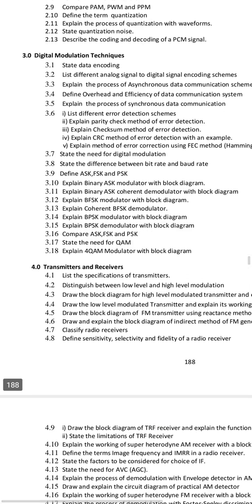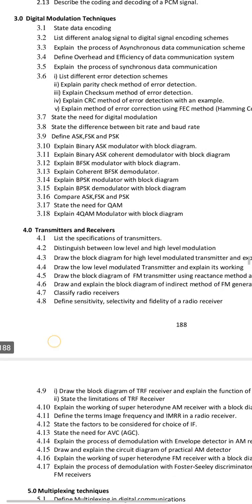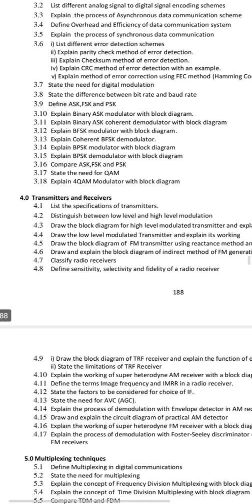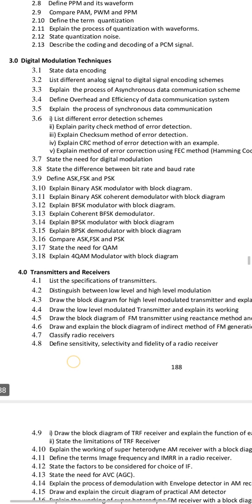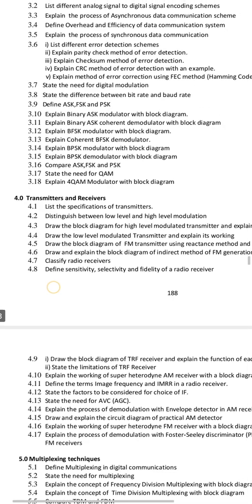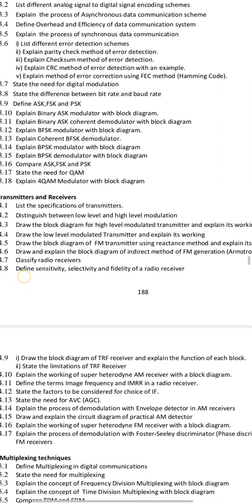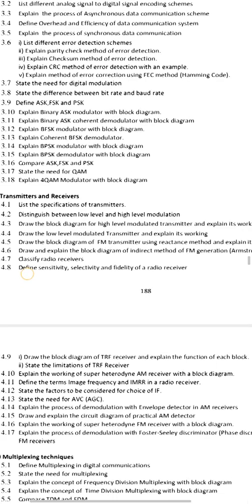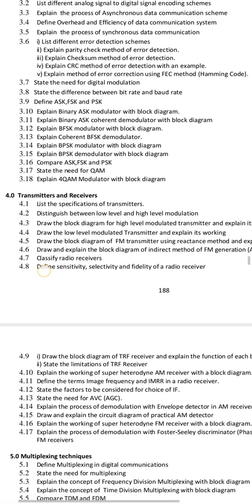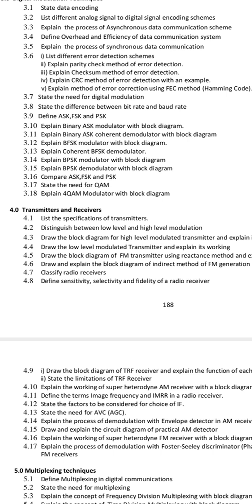That is the fourth chapter. For short answer questions in Chapter 4, you have envelope detector, practical AM detector, FM receiver, and AGC. You can talk about these, but they are very custom. I will explain the working of Superheterodyne AM receiver with block diagram, or FM receiver with block diagram.